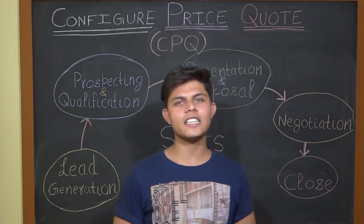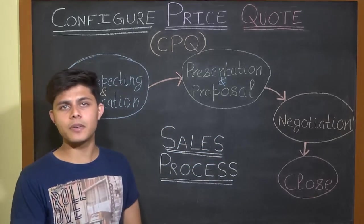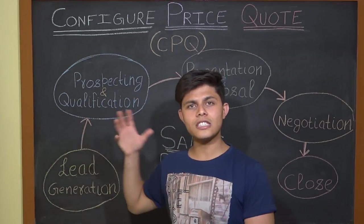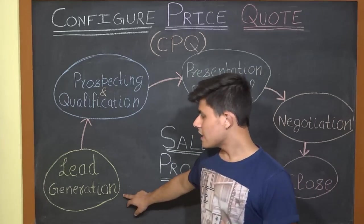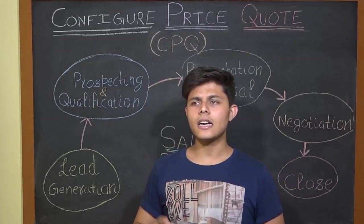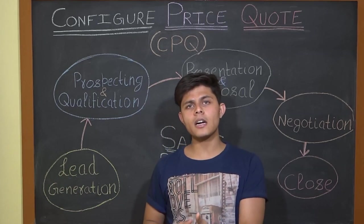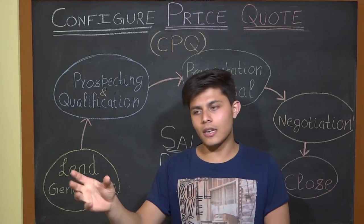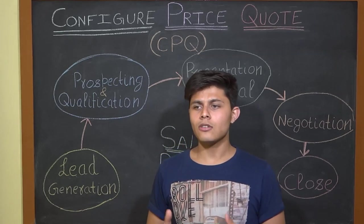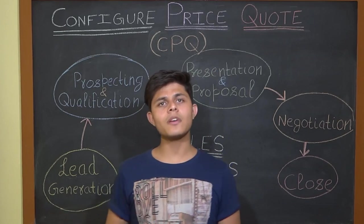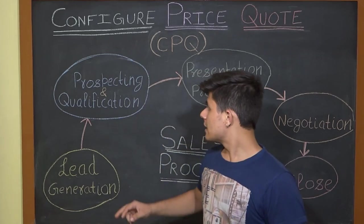The first point is: what is the basic sales process every company follows? Here is a simple flow — these are the steps which almost every company goes through to sell something. Step one is lead generation. Leads are your potential customers — people or businesses who can buy your product or service. Lead generation means getting the information of those people who can be interested in buying what you're selling.